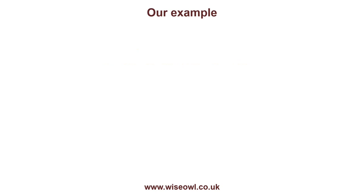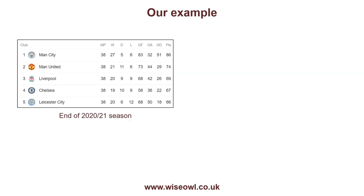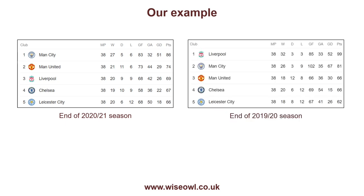The example we're going to be doing during this tutorial will be primarily around the Premier League, which is English football. This is the results at the end of the 2020-21 season, and these are the results at the end of the 2019-20 season. By a happy coincidence, the same five teams finished in the top five positions, which means we can create arrays pretending that these are the only teams in the league, and then we can manipulate them to show exciting results.